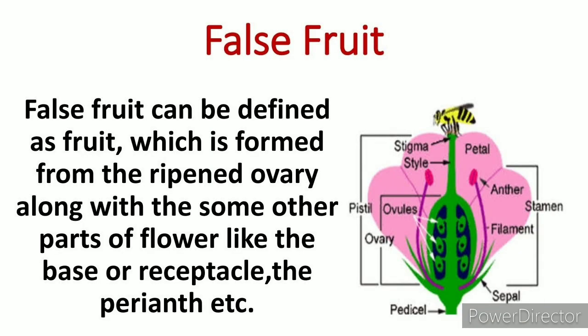Next is false fruit. False fruit can be defined as fruit which is formed from a ripened ovary along with some other parts of the flower, like the base of the flower or receptacle, the perianth, etc. It means that the ovary along with the flower's other parts also supports fruit formation — like the flower's thalamus, receptacle, and perianth. This type of fruit is called false fruit.